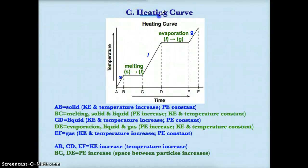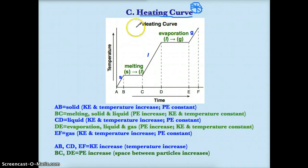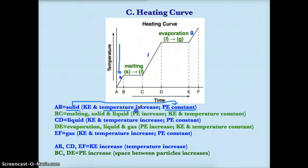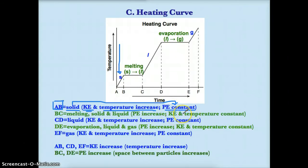Now let's break down a heating curve region by region — this is what you need to memorize. AB, the first positive sloping line on any heating curve, is the solid or S phase. Since you only have one phase of solid, potential energy is constant because the phase is not changing. The temperature is increasing, so kinetic energy is also increasing. To summarize AB: kinetic energy and temperature increase, while potential energy and phase remain constant — it's only one phase, solid.